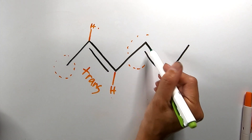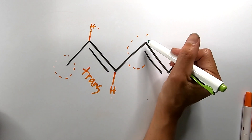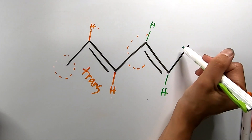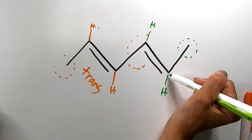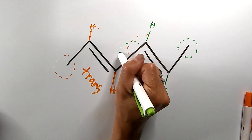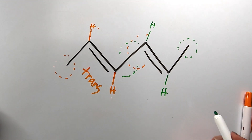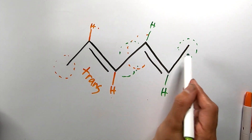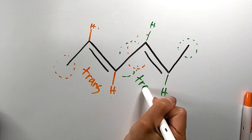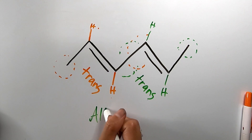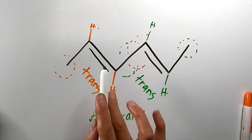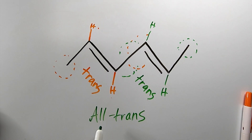Now I'll look at this second double bond and do the same thing — align my eyes parallel to the double bond. I'll draw a hydrogen here and a hydrogen here. The rest of the group is the priority on one carbon, and on the other carbon the remaining portion is the priority. Once again, they're on opposite sides of the double bond, as far away from each other as possible, so this is also trans. We can call this an all-trans molecule, which tends to be linear or more straight than the previous cis example.